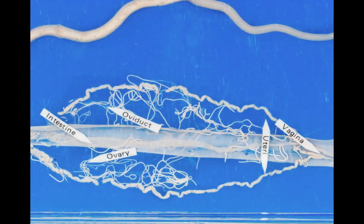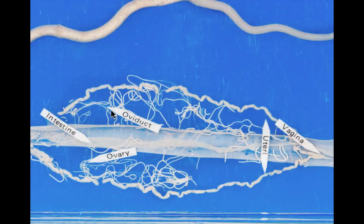Let's look at a dissected female Ascaris to get a better idea of what the reproductive system looks like. This is available to you in the laboratory. The female reproductive system is paired, having two of every structure except the vagina. The vagina branches into two uteri. Each uterus is connected to an oviduct. The oviduct, in turn, is connected to the ovary, the very smallest diameter tubes that are visible here. Each half of the female reproductive system is a single long tube of decreasing diameter, moving from the vagina to the ovary.